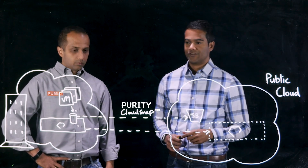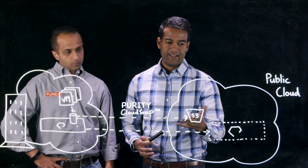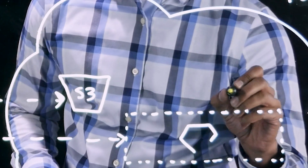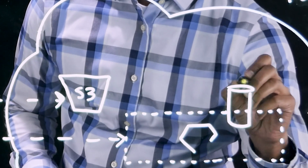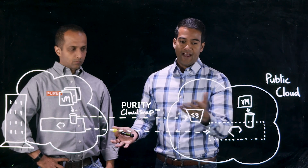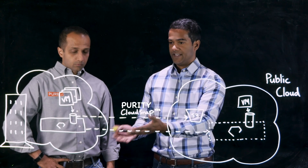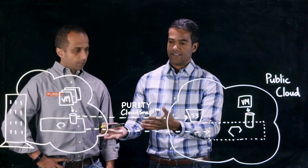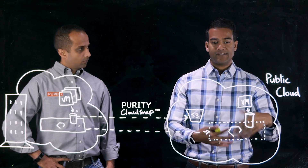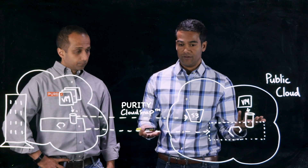Yeah, absolutely. Cloud Block Store enables you to asynchronously replicate data from an on-prem flash array, so you can have access to the same data in the cloud that you have on-prem. You can use that for disaster recovery — in the case of a disaster, your data has always been replicating into the cloud, you can easily spin up that volume and it's now accessible for your application so you can recover.